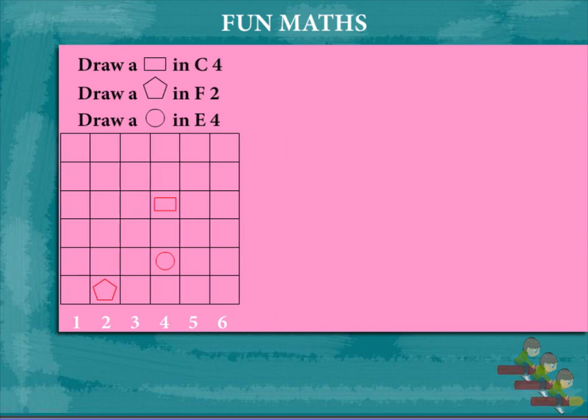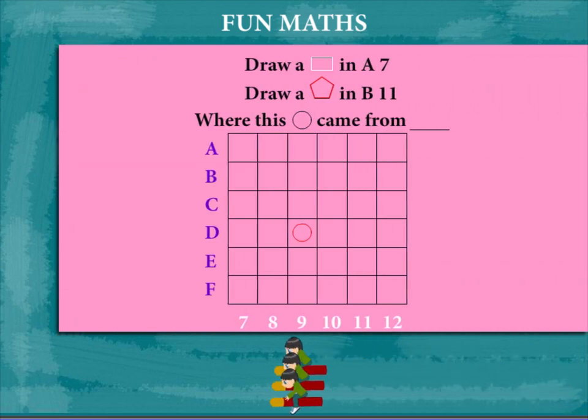Here is another grid to draw a rectangle in A7. That's simple. Row A, column 7.